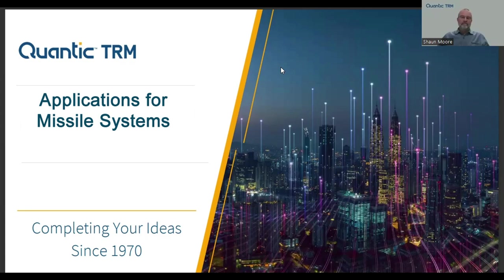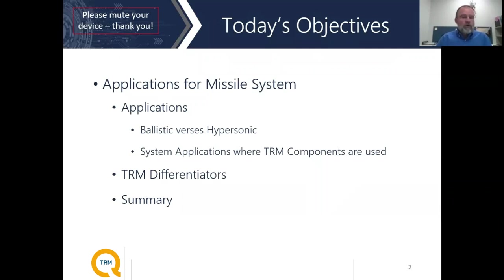Sean, can you share an overview of today's topic and your objectives for the session? What I'd like to talk about are applications for missile systems. There's actually quite a bit of RF componentry on the missile itself, as well as on the ground-based support equipment. The missile is no longer just a rocket that goes where it wants to go — it's controlled, and it needs data links as well as other information-gathering mechanisms to have a successful mission. The big buzzword today is hypersonic missiles — what is the difference between a ballistic missile and a hypersonic missile? I'd also like to talk about where TRM's components are used on missile systems, then go through some TRM differentiators, and wrap it up as a summary.